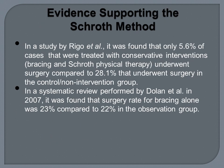As for physical therapy, we have the Schroth method. In a study by Rego et al., only 5.6% of cases treated with conservative interventions — bracing and Schroth physical therapy — underwent surgery, compared to 28.1% in the control or non-intervention group. Also, in a systematic review by Dolan et al. in 2007, the surgery rate for bracing alone was 23%, compared to 22% in the observation group. Current literature is showing real promise with the combination of bracing and Schroth physical therapy for treating patients with scoliosis.